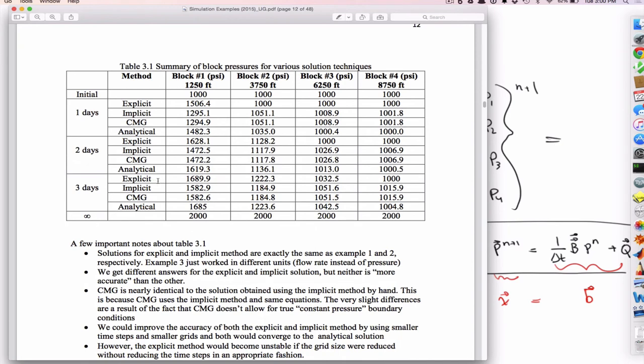And so also you'll see that the explicit and implicit results, they're different from each other, right? But no one... One is no more correct than the other. And if you were to take... The differences can be explained by the coarsity of the problem. There's only four grid blocks. If you were to take 400 grid blocks, I suspect that the differences between the explicit and implicit would be much, much smaller.